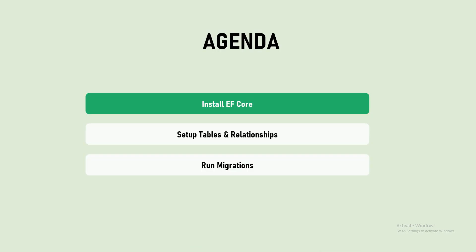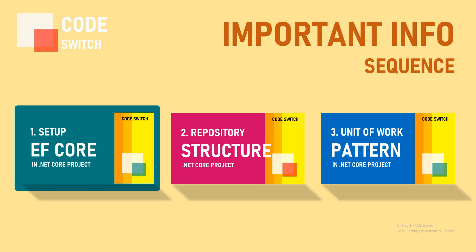In this video we are going to cover three steps: how to install Entity Framework Core, how to set up the tables and relationships, and how to run migrations. This video is part of a three-video series. The second video covers the repository structure to avoid coupling and make code more readable. The third video covers the unit of work pattern, which allows you to create service-based applications with very little, very readable code.